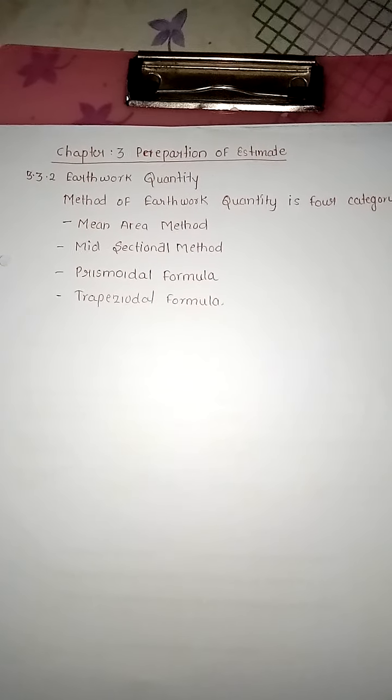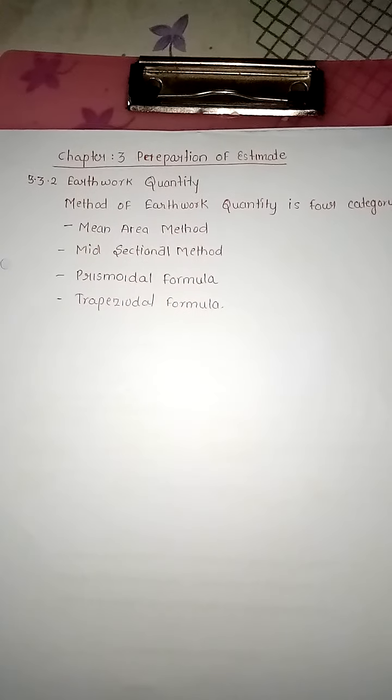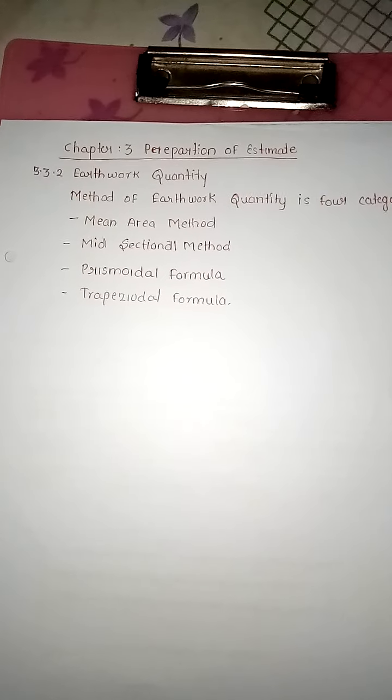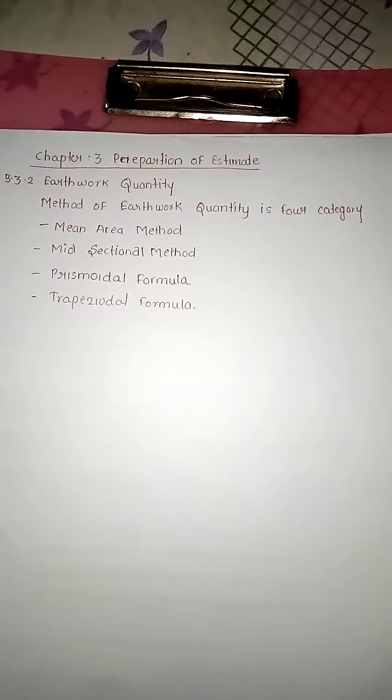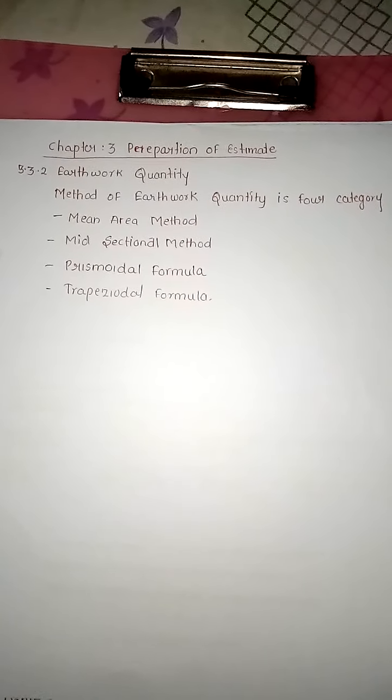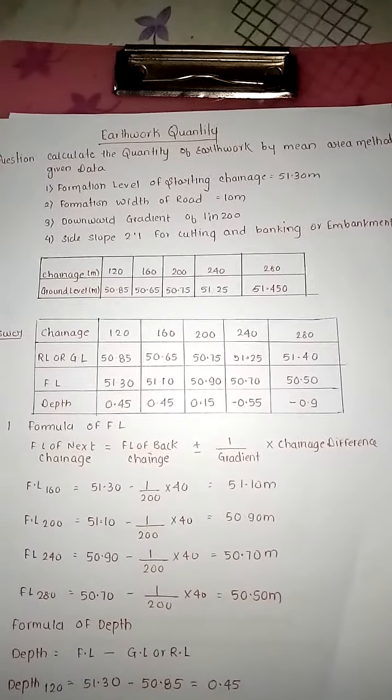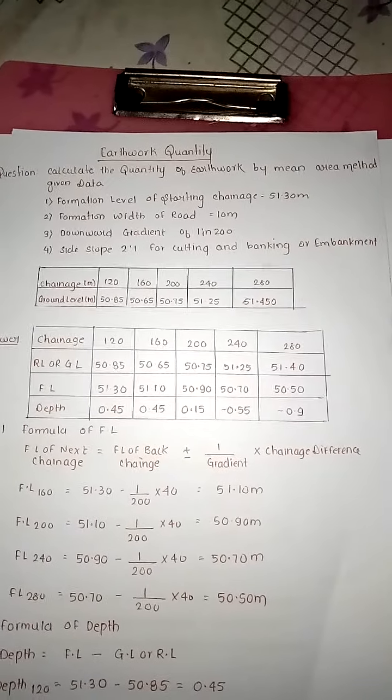Today's topic is Estimate and Costing, Chapter Number 3, Preparation of Estimate, section 3.32. Earthwork quantity - the method of earthwork quantity is in four categories based on: mean area method, midsectional method, prismoidal formula, and trapezoidal formula. Now, how to find out earthwork quantity using these four methods? Question number one: calculate